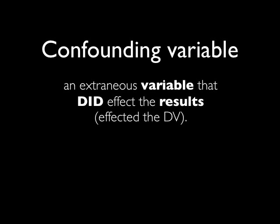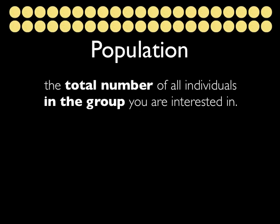When you're thinking about any research, you need to first think about your population — that is, who are you interested in studying? The population involves the total number of all individuals in that group you're interested in. For example, if you're interested in Australians, your population would be all Australians.